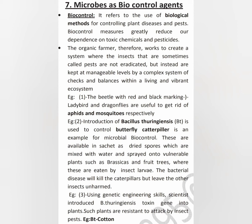The next biocontrol method is the introduction of Bacillus thuringiensis. Bacillus thuringiensis is used to control butterfly caterpillars. This is an example of microbial biocontrol — Bacillus thuringiensis is used to control butterflies and caterpillars.